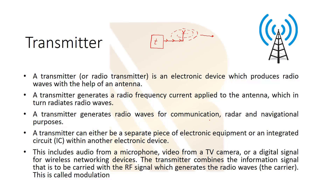A transmitter generates radio waves for communication, radar, and navigational purposes. A transmitter can be a separate piece of electronic equipment or an integrated circuit combined with another device. The data — which can be audio, video, or digital signal — is frequency-shifted. The transmitter combines the information signal with the RF carrier signal, which generates the radio wave and sends it into free space.